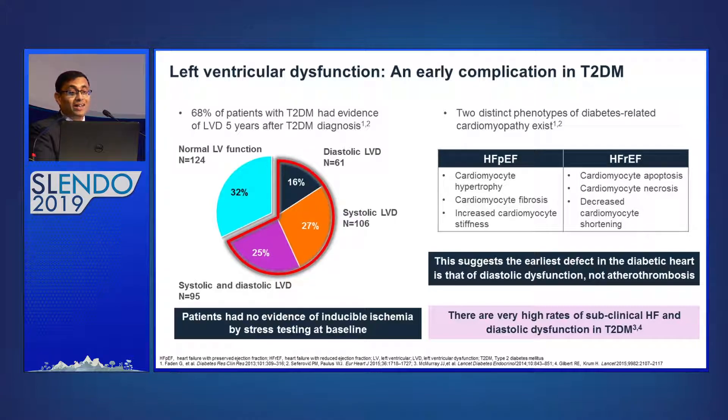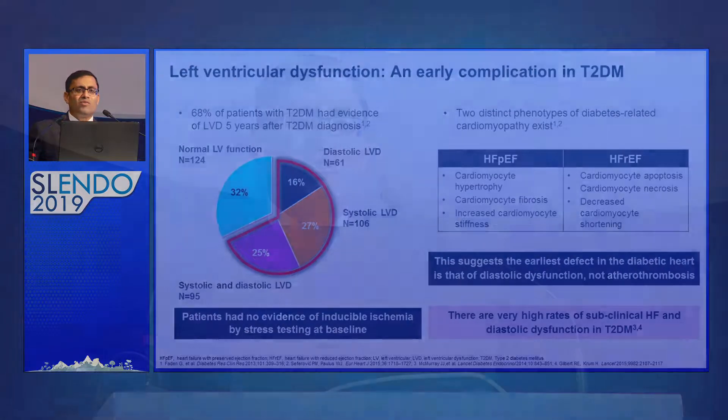If the patient is symptomatic, they can have heart failure — that is clinically obvious. Heart failure can be divided into two types: preserved ejection fraction heart failure (HFpEF), where ejection fraction is more than 40 to 45 percent, and reduced ejection fraction heart failure (HFrEF). HFrEF is mainly associated with systolic dysfunction and HFpEF mainly with diastolic dysfunction — and both can be seen in a patient with diabetes, with a very high rate of subclinical heart failure.